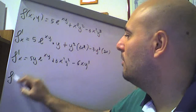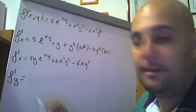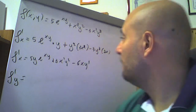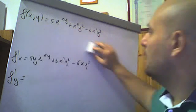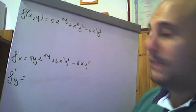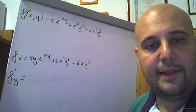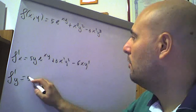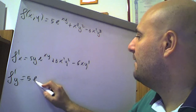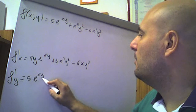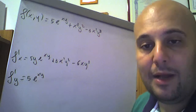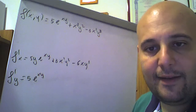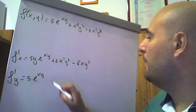Deriviamo adesso la f rispetto alla y. Questa volta è molto simile: la derivata di 5e alla xy, 5 rimane fuori, derivata di e alla f è sempre e alla f per f'. Questa volta è 5e alla xy per x, che sta fuori perché è una costante, derivata di y è 1, per x.